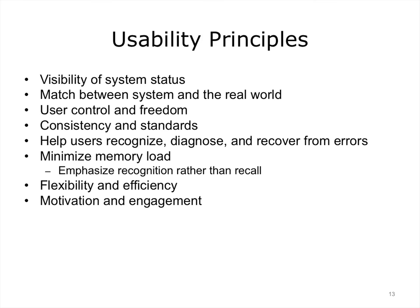So what do we evaluate for? Nielsen articulated a set of very general and broadly applicable heuristics. Visibility of system status refers to how easily one can determine the state of the system at a given moment in time. For example, if you click on a link and it's taking a long time to load, you should be able to tell whether the server is slow or overloaded, or whether the page is no longer accessible. A match between the system and the real world suggests that the system should speak the user's language using words, phrases, and concepts familiar to the user rather than system-oriented speak.